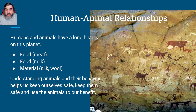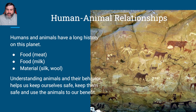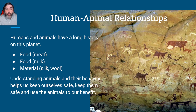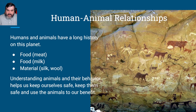We do this for lots of things — the obvious one is meat, but also milk, eggs, and other food products. Animals also provide us with fur, silk, and wool. Understanding animals and their behavior helps us understand how to work with them, hunt them, keep them safe, and ultimately use them to our benefit.